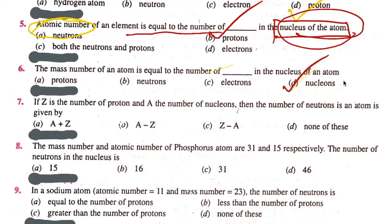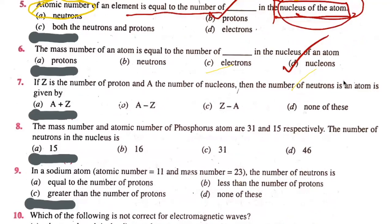Seventh question. If Z is the number of protons and A is the number of nucleons, then the number of neutrons in an atom is given by: A plus Z, A minus Z, Z minus A, or none of these. The correct answer is A minus Z.